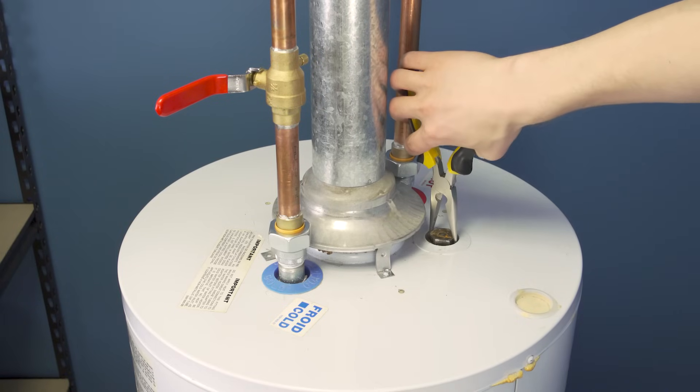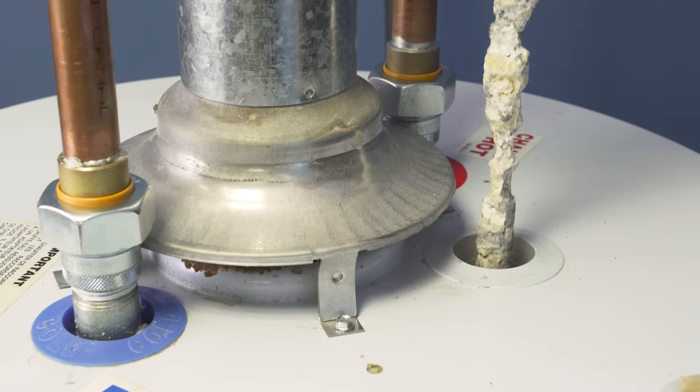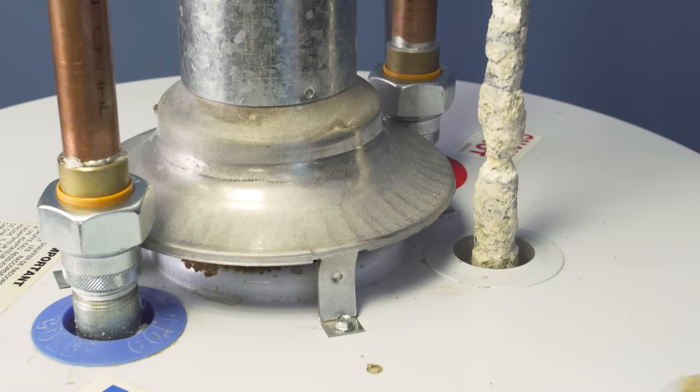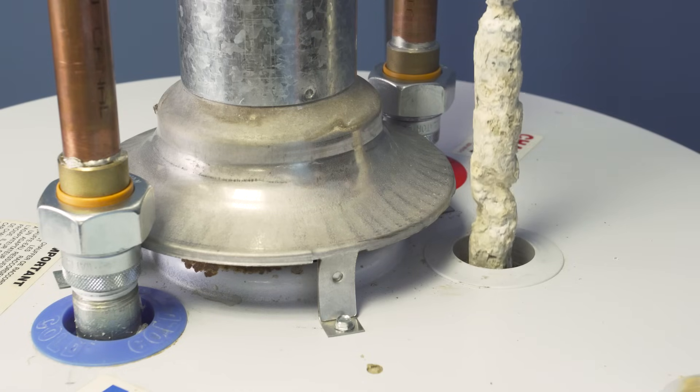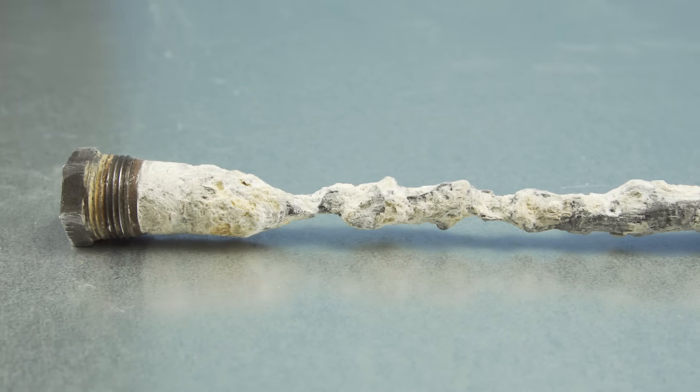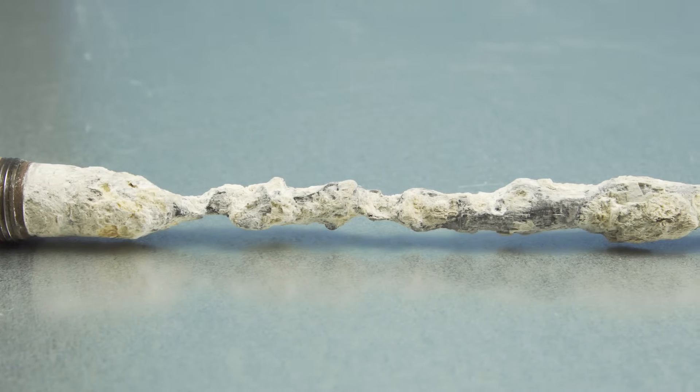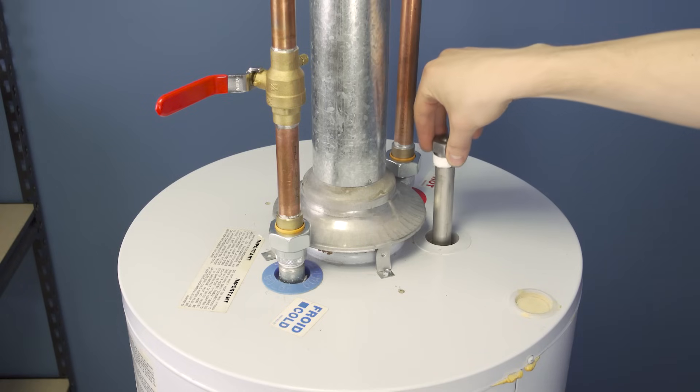Now use the needle nose pliers to remove the anode rod. Each year that you check the anode, take note of what has changed. Most anode rods will last 4 to 6 years, but this depends on the pH and purity of the water. If you can see the bare steel core, or if the rod is completely encased with calcium, then the anode will have to be replaced.